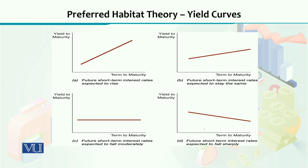To further explain the preferred habitat theory, I am going to show 4 different types of graphs in this diagram. In Panel A, we have term to maturity along the x-axis and yield to maturity along the vertical axis. The yield curve here is upward-moving, which tells you that investors expect short-term interest rates to increase in the future, so the yield curve slopes upwards.